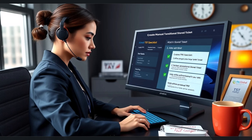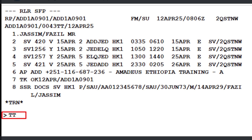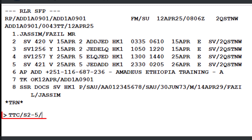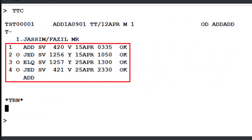Let's begin the process of creating a manual Transitional Stored Ticket. To start, use the TTC transaction. After that, type a slash followed by the letter S to indicate the segment, then enter 2-5 to specify segments 2 through 5 of the PNR. Next, add another slash followed by the letter P, representing the passenger, and the number 1 to indicate passenger 1. Once you've entered the command, press Enter to create the manual TST. The system has now generated a manual TST and updated all the required air segments of the PNR with their respective statuses.